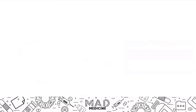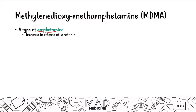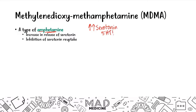Now let's talk about MDMA — methylenedioxymethamphetamine — also known as ecstasy. MDMA is a type of amphetamine, and what it does is increase serotonin levels and inhibit serotonin reuptake. It acts somewhat like an SSRI but not exactly. The key mechanism is that it leads to increased serotonin, also known as 5-HT — and that's what gives you the euphoric feeling.